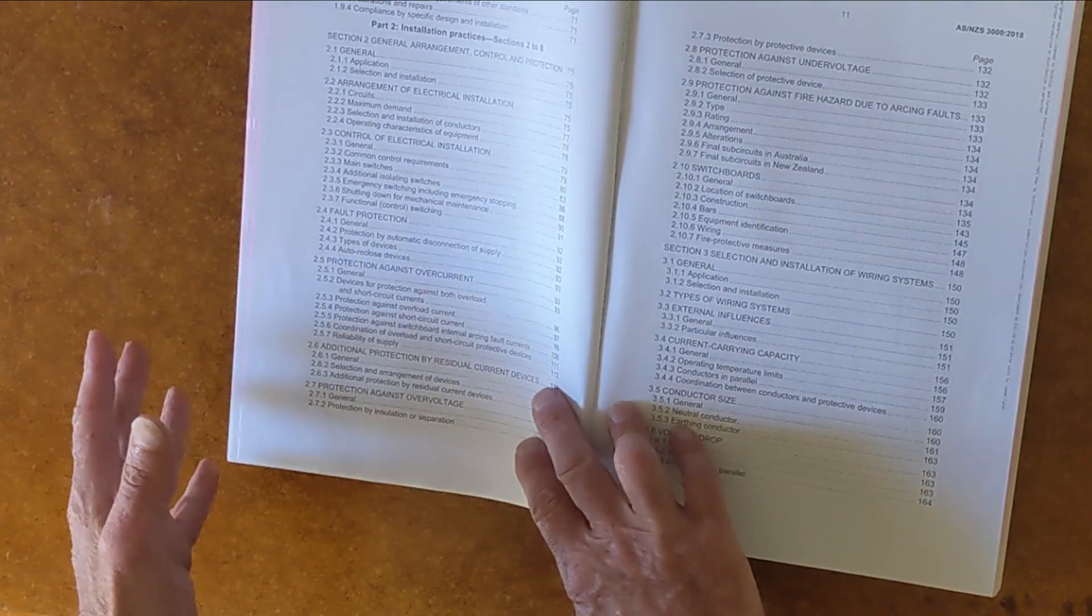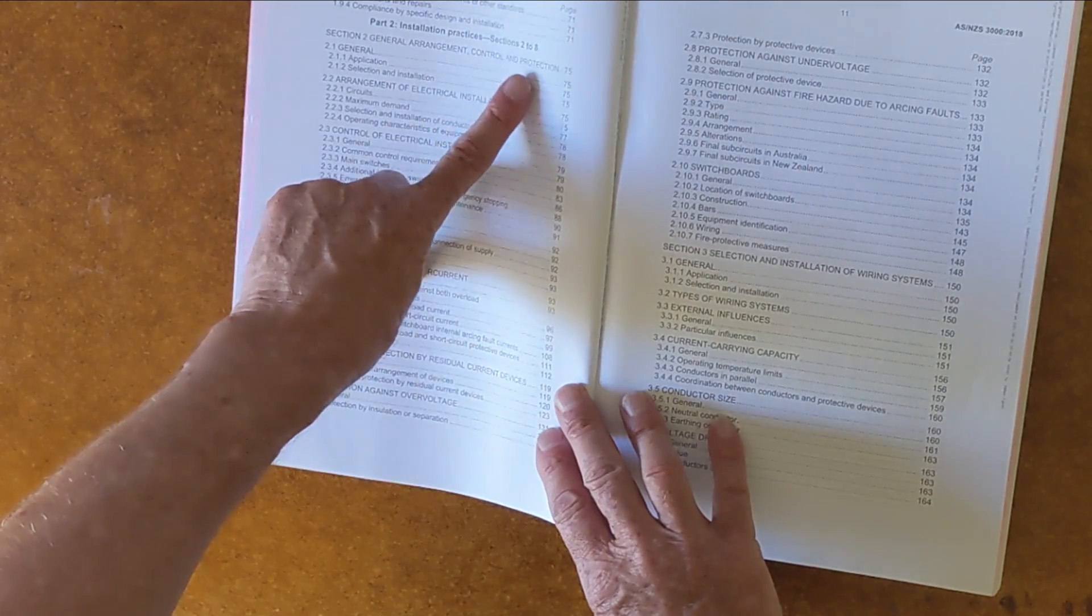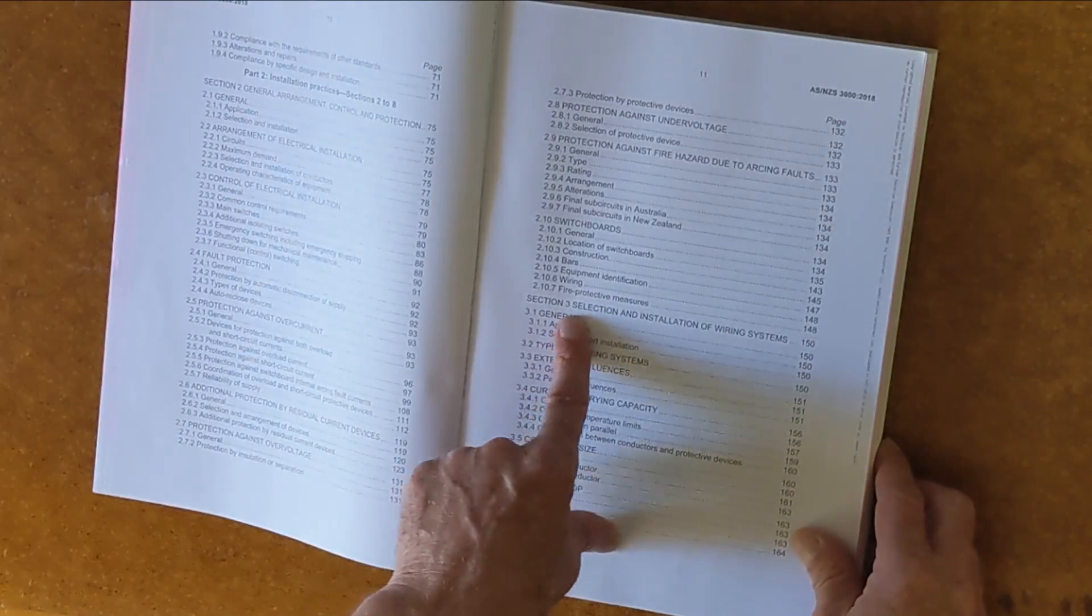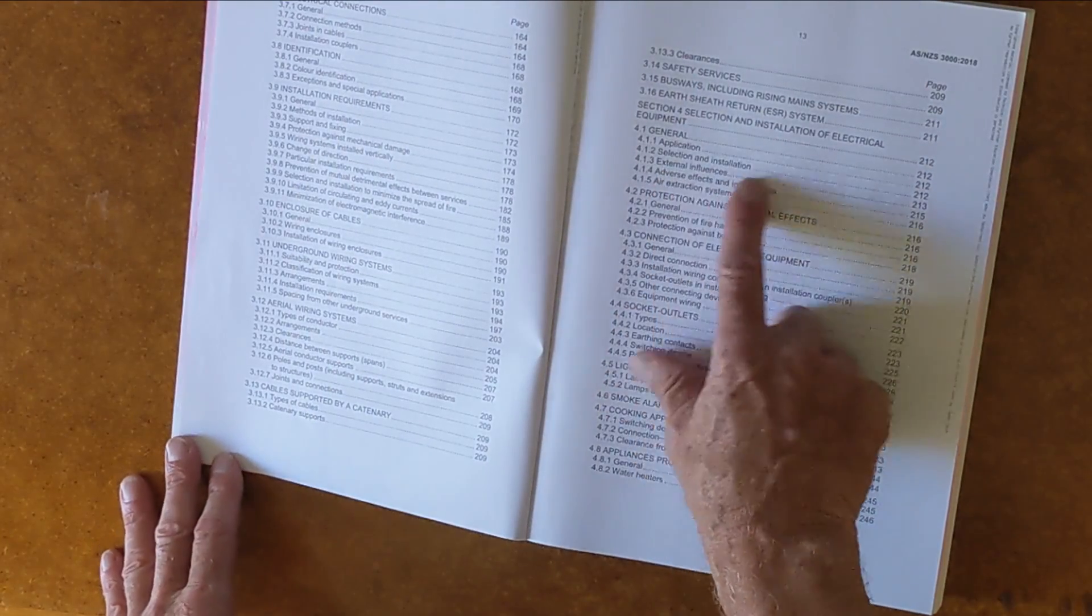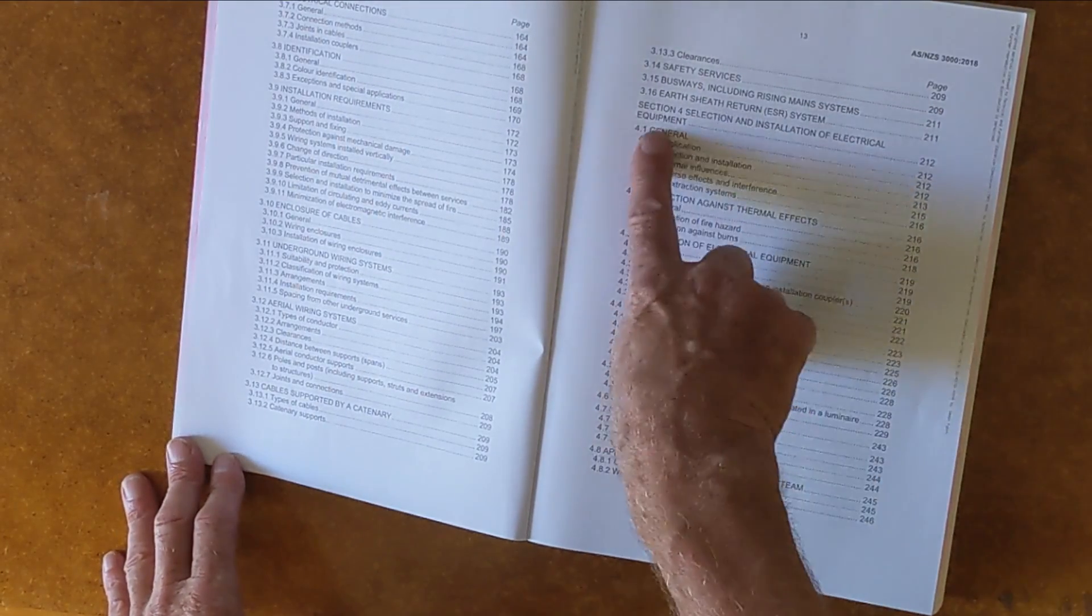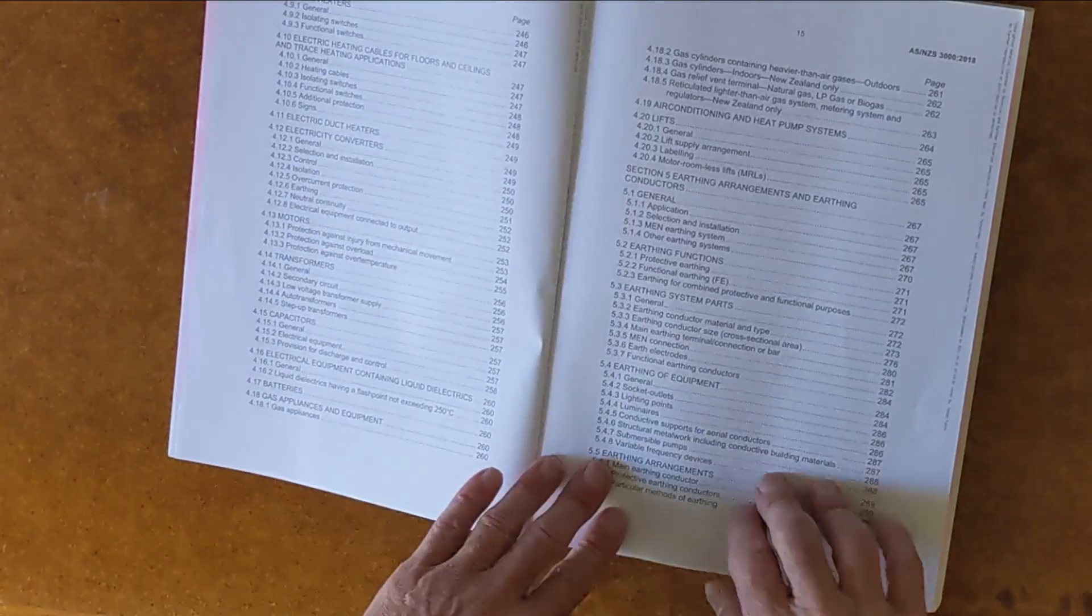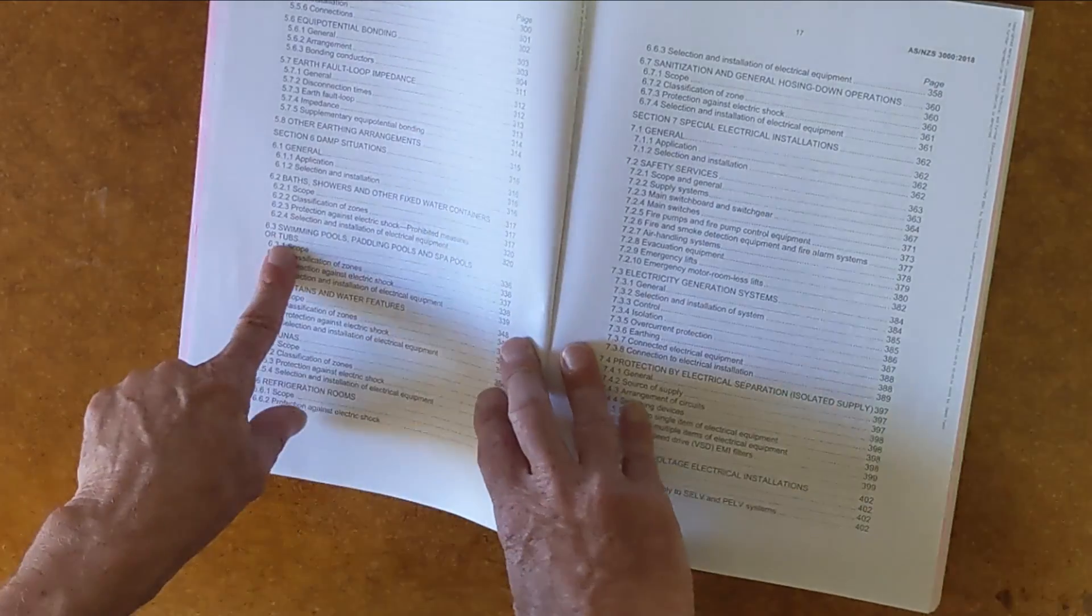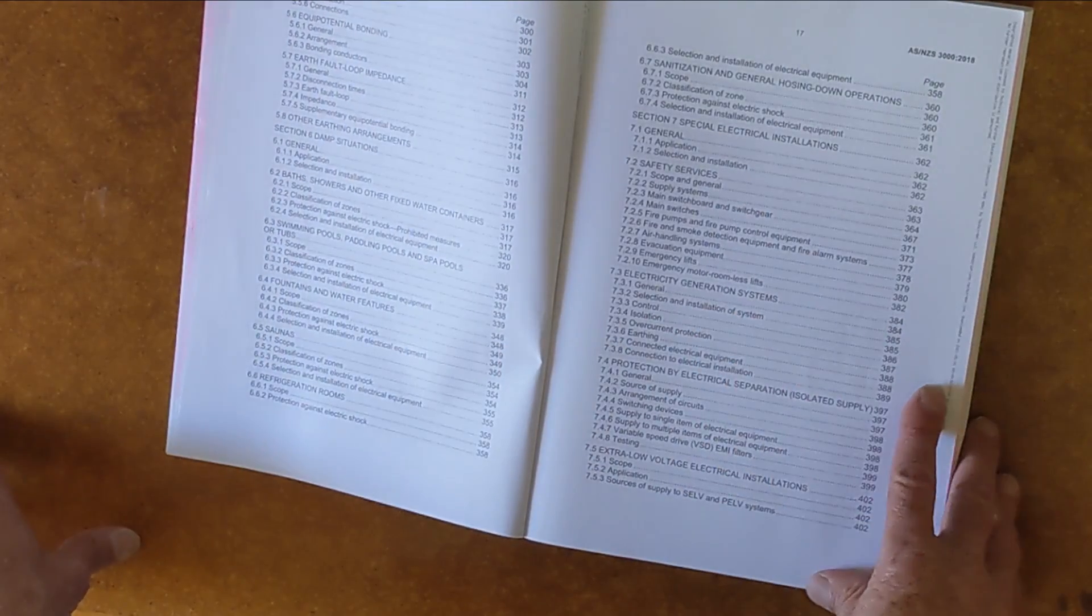Section two, general arrangement control and protection. Section three is selection of wiring systems. Section four is selection and installations of electrical equipment. Let's call them loads. Section five is earthing. Section six is swimming pools, spas, basically wet areas.